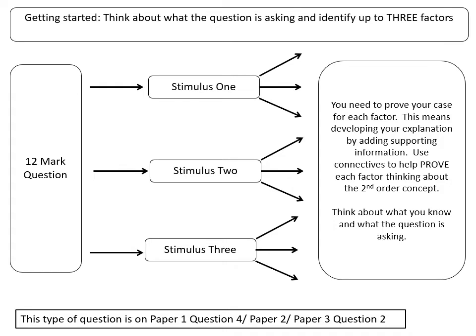Paper one question four, paper two the British Depth Study question two, and paper three question two all follow this similar model, so you're used to working with this question throughout your GCSE course. You're given two stimulus materials, and there's a reminder that you need three actual reasons in your answer.